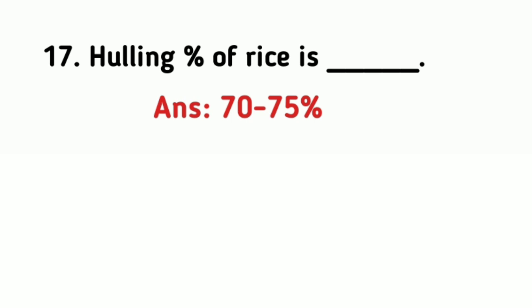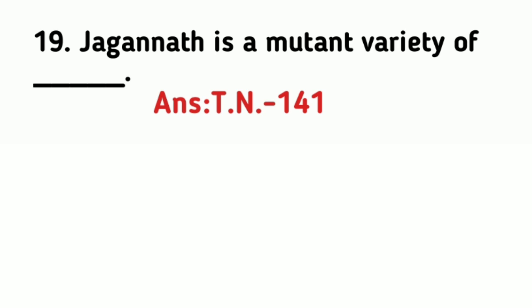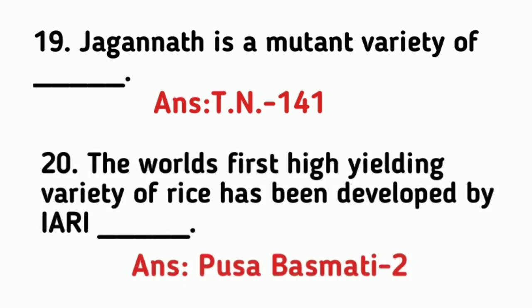The hulling percentage of rice is 70 to 75 percent. The first developed rice variety is TN1. Jagannath is a mutant variety of TN141. The world's first high yielding variety of rice developed by IARI is Pusa Basmati 2.